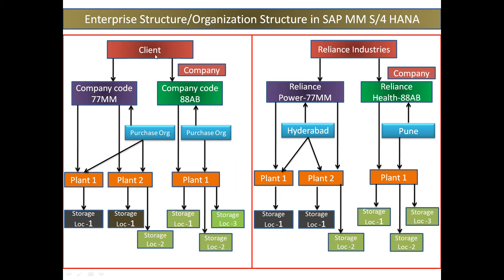There will be a client, there will be the company code, there will be the plant, and there will be the storage location. This is the hierarchy of the structure in SAP. Always in the hierarchy, the client will be at the top, second will be your company code, third hierarchy will be your plant, and fourth hierarchy will be your storage location.